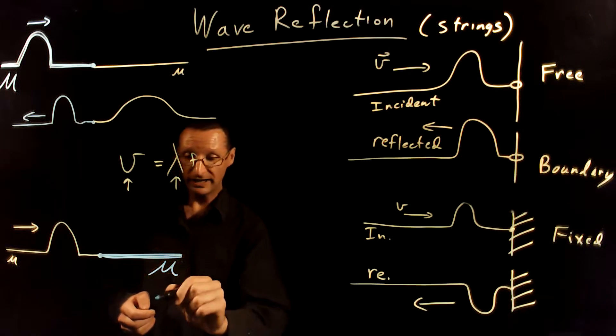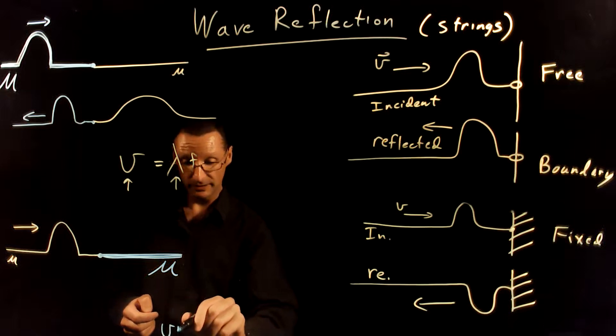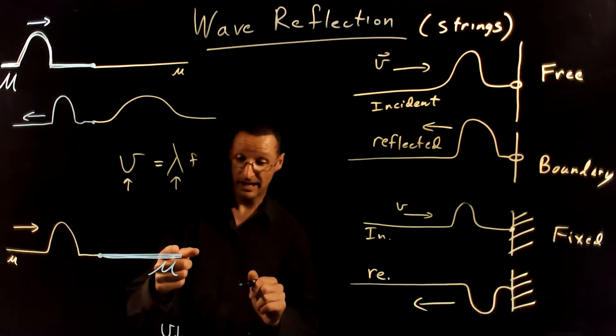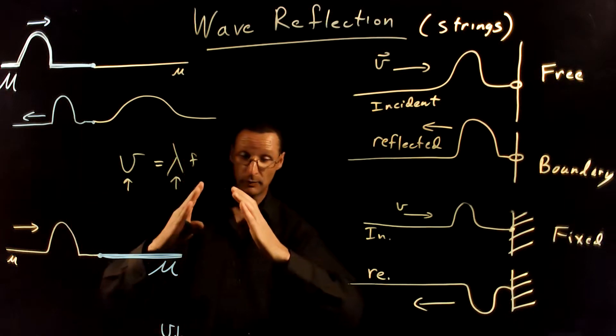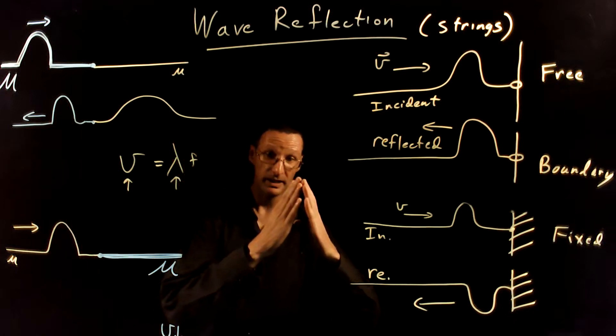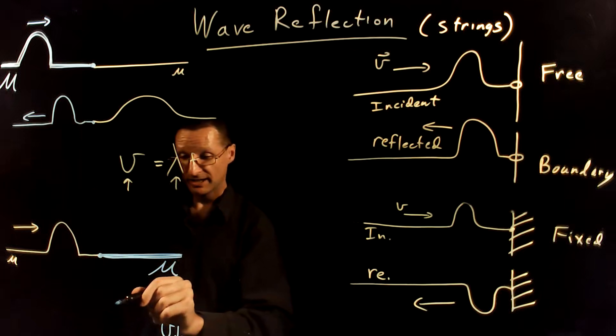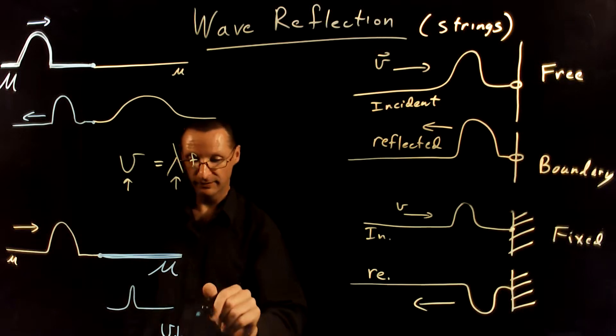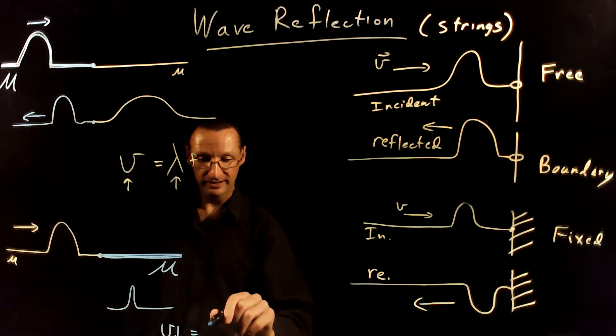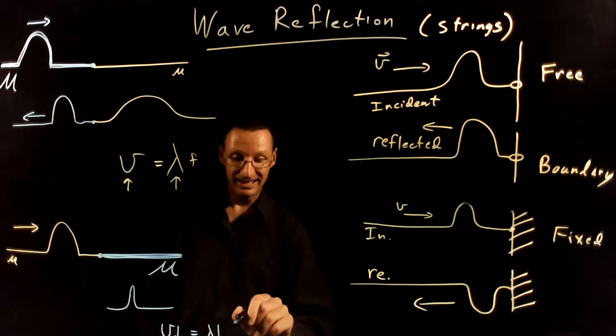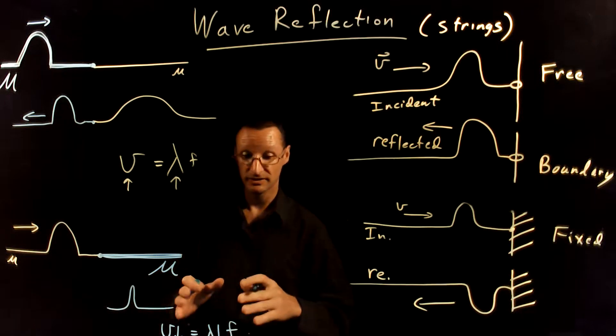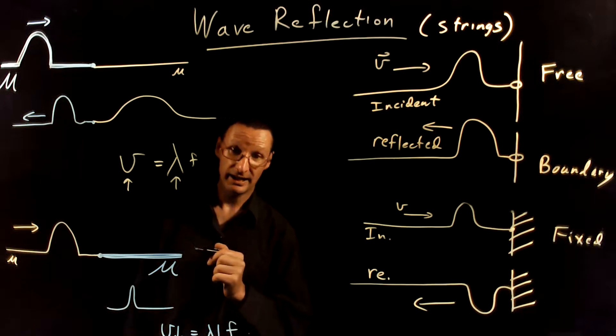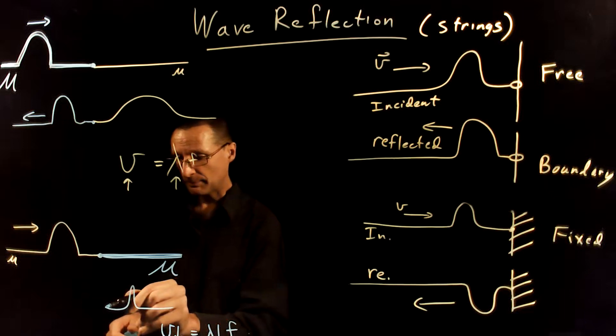The wave speed is going to decrease because of the larger mass density. As it decreases, that wave pulse is going to bunch up when it reaches the boundary, so you're going to get a shorter wavelength here. The wavelength is going to have decreased, but again, the frequency is determined by the oscillations of the source, so the frequency will not have changed.